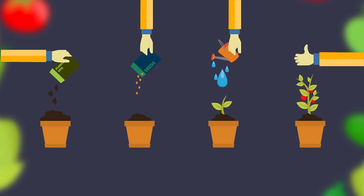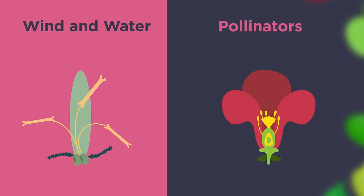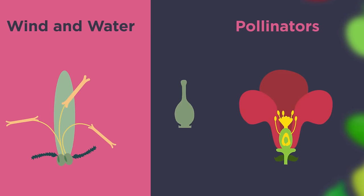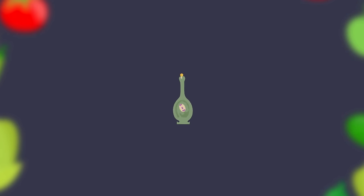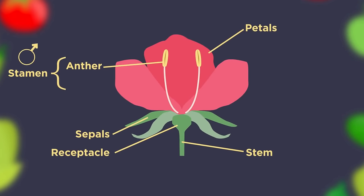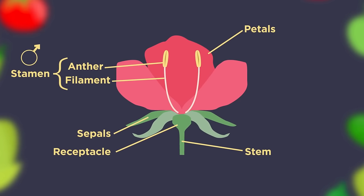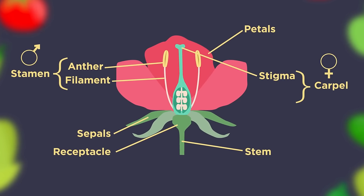So there we have sexual reproduction in plants. Pollination has to happen before fertilization. The male pollen is produced in the anther, where it is then dispersed during pollination. The female parts of the flower are the stigma, style, and the ovary.